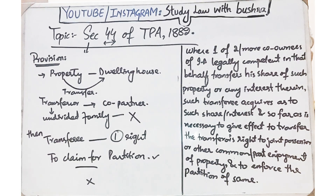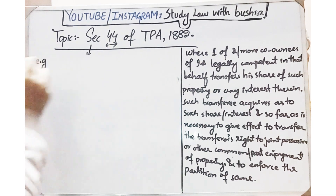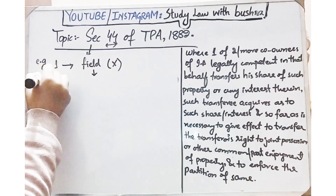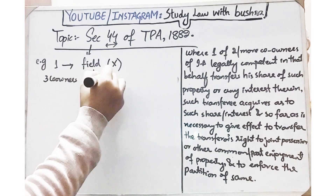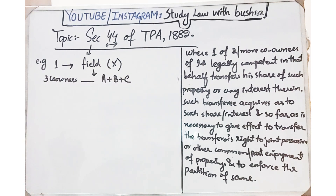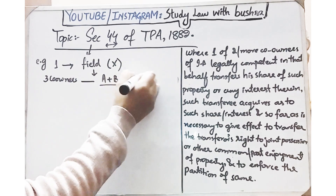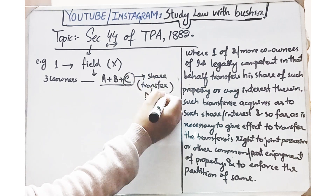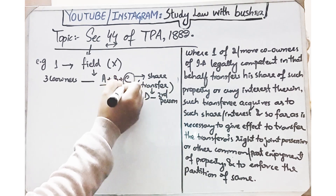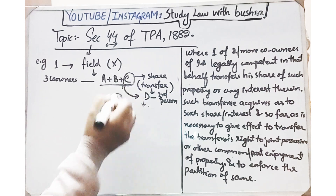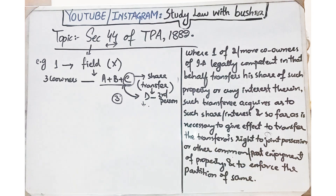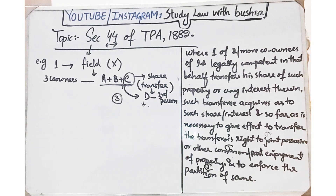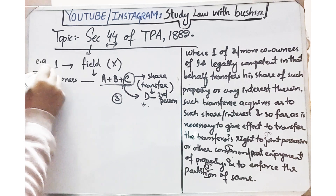Let's understand this section through an example. For example, there is a property — let's say a field denoted as X — which has three co-owners: A, B, and C. Among these three, C wants to transfer his share/interest to a third person, say D. C transfers his right to D. In this situation, under Section 44, D will get all three rights: right to possession, right to enjoyment of the property, and right to claim partition — the three rights that C was previously enjoying will now pass to D.